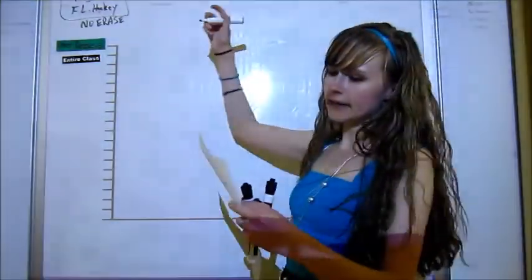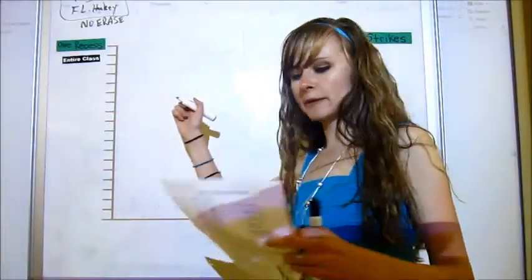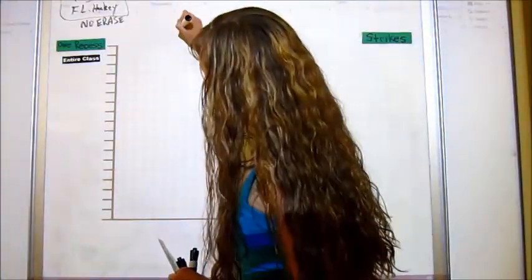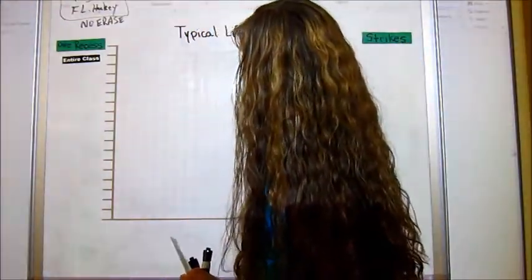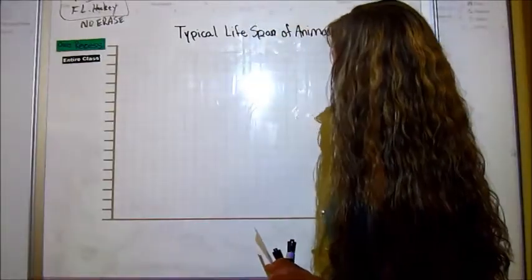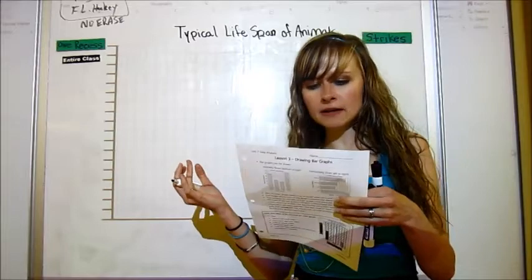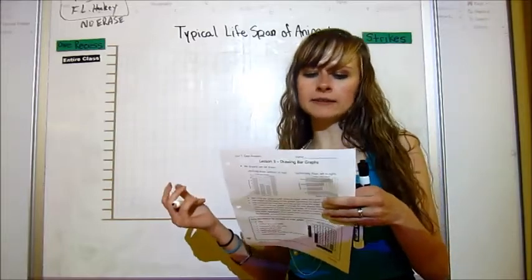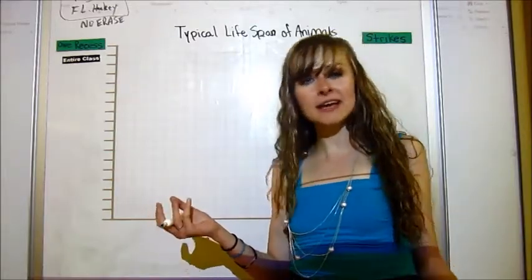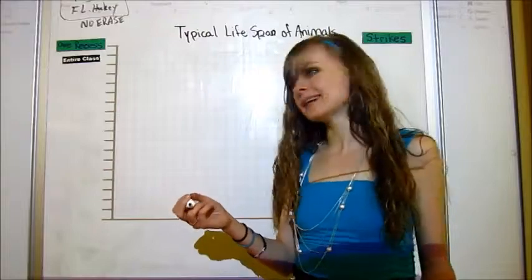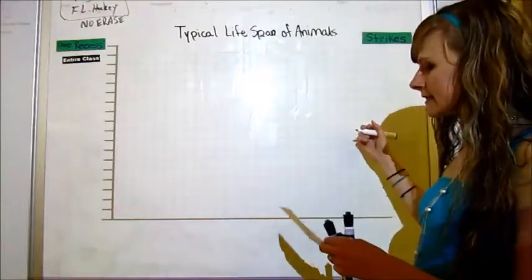First, I'm going to put a title because I always forget them if I don't put them at first. So typical lifespan of animals. There are no particular type of animal. We've got dolphin, bear, whale and seahorse. We almost could have said sea animals, but a bear is not a sea animal.